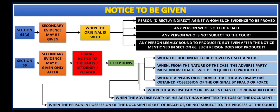That is all about Section 66. Now there are six exceptions available under Section 66. The first is when the document to be proved is itself a notice. The primary evidence itself is the notice as discussed under Section 66. But if the party is not producing that, in that case secondary evidence may be given.